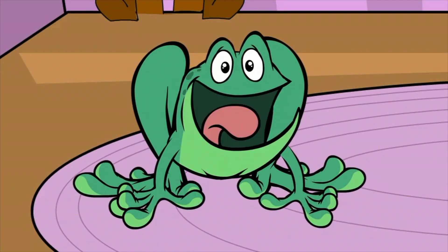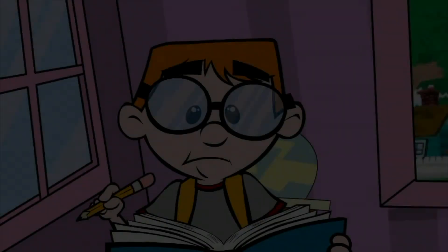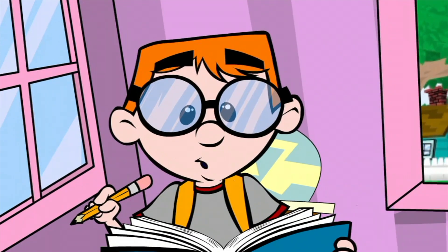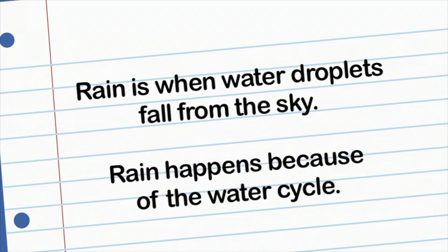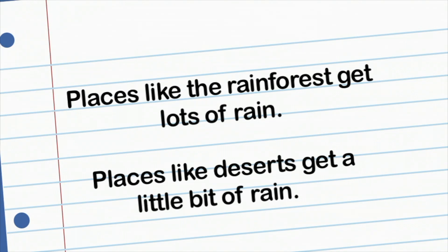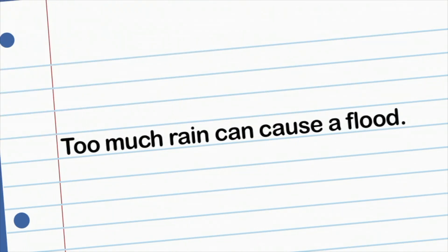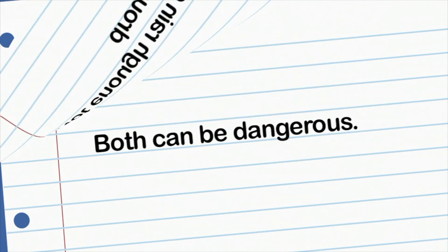I get it. Thanks, Maggie. You're very, very welcome. Today I learned a lot about rainstorms. I hope you did too. These are the notes I took in my journal: Rain is when water droplets fall from the sky. Rain happens because of the water cycle. There are two types of rain clouds — nimbostratus and cumulonimbus clouds. Some places like rainforests get lots of rain, and some places like deserts get very little. Too much rain can cause rivers and lakes to overflow or flood; not enough rain can cause a drought. Both can be dangerous.